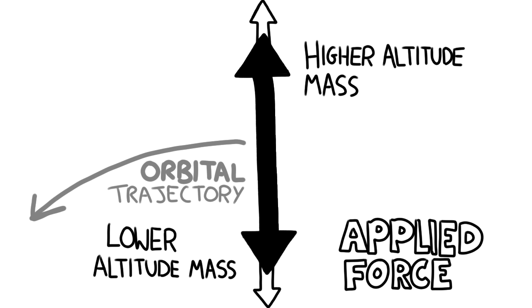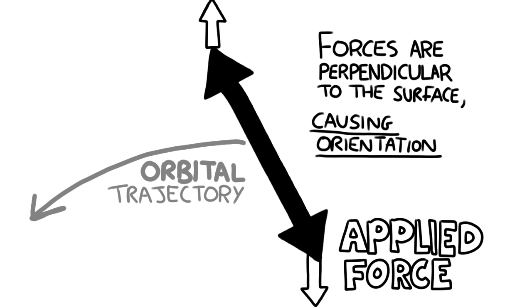Similarly, the mass at lower altitudes has insufficient velocity to follow the orbit and will try to fall down to a lower one, applying force to the object. The combination of these forces causes the low altitude mass to stay low and the high altitude mass to stay high, keeping the spacecraft as a whole oriented one way.